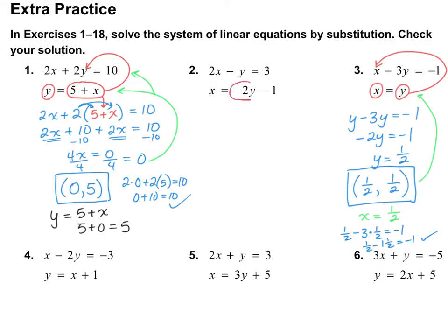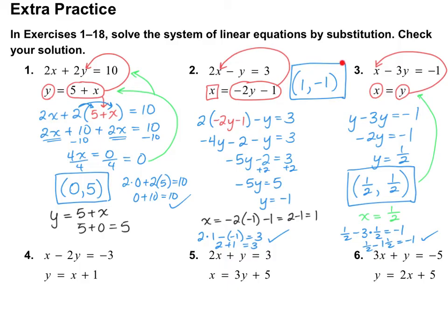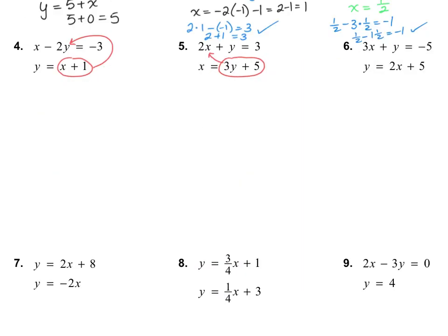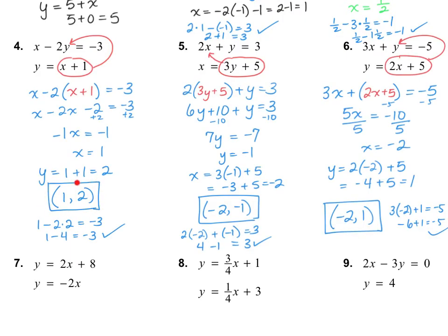I'm going to have you try number 2 on your own. Hint: take x from the second equation and substitute it in for x on the first equation. Go ahead and pause the video and see if you can finish number 2. For number 2, I got (1, negative 1). If you did not get that, please pause and find your mistake. Try numbers 4, 5, and 6 on your own as well. For number 4, I got (1, 2). For number 5, (negative 2, negative 1). Number 6 is (negative 2, 1). Please pause if you got anything incorrect.